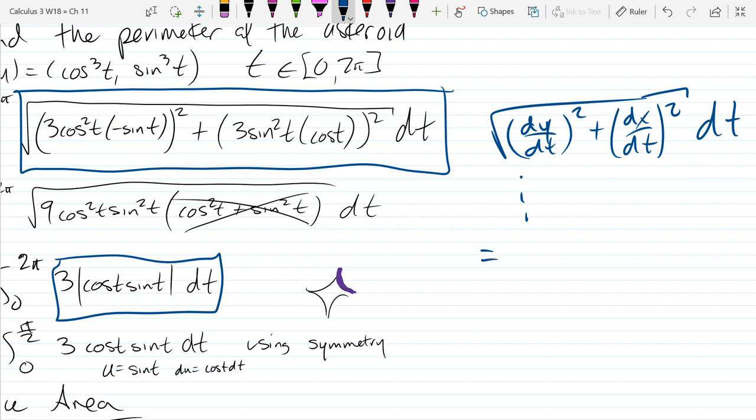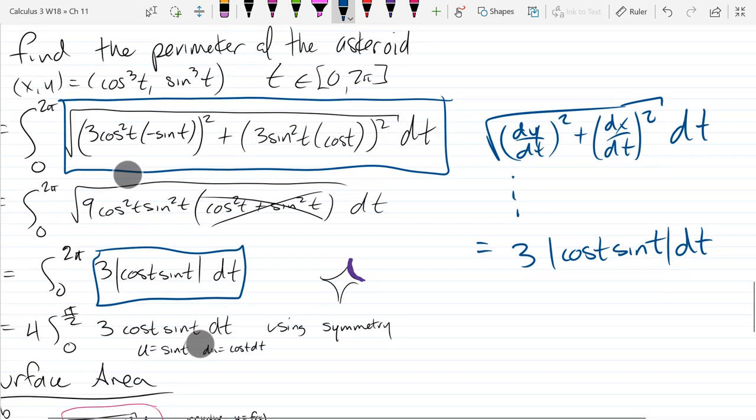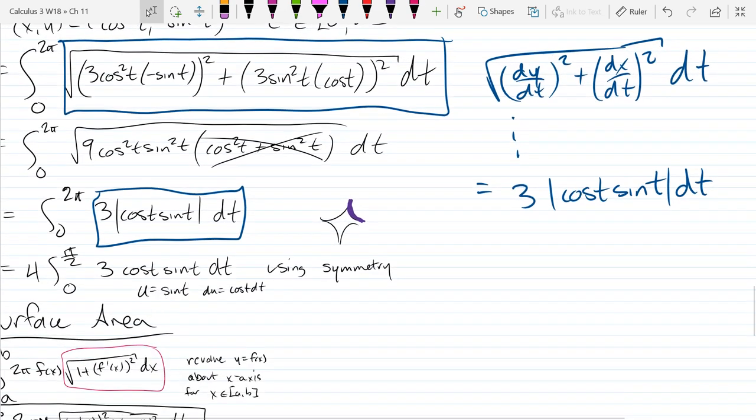Which will correspond to square root dy/dt squared plus dx/dt squared dt. So the part I just put a box around, which disappeared, is this part right here. We did a whole lot of work. Well, it was only a few algebra steps, but I skipped a few.